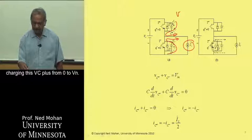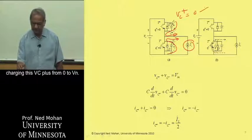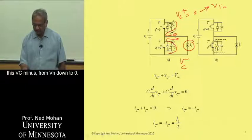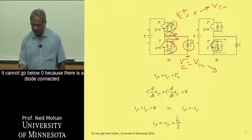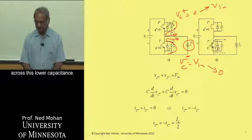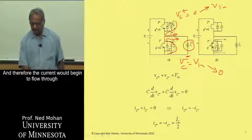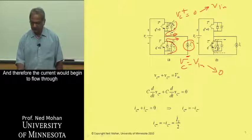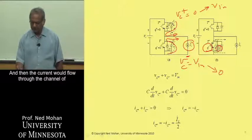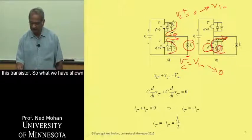So what this is doing is it is charging this VC plus from zero to Vin, and it's discharging this lower capacitance, VC minus, from Vin down to zero. It cannot go below zero because there's a diode connected across this lower capacitance, and therefore the current would begin to flow through this diode over here at some point, and then we can gate on this lower transistor, and then the current would flow through the channel of this transistor.